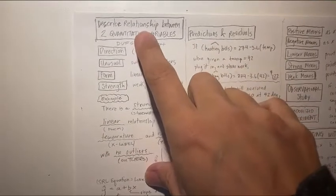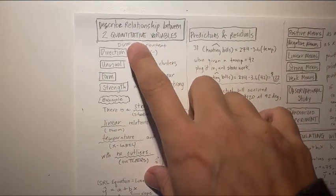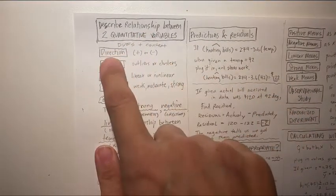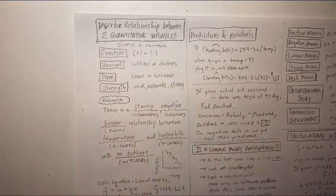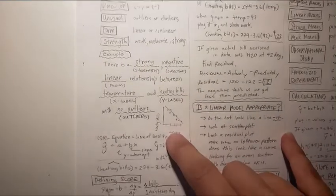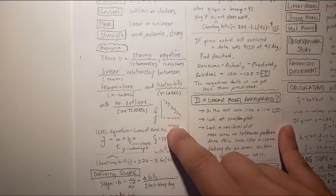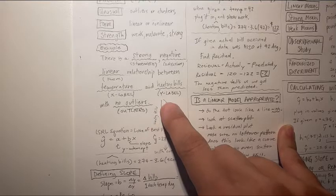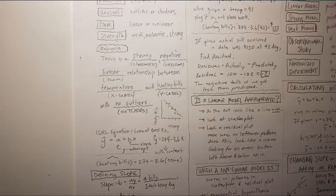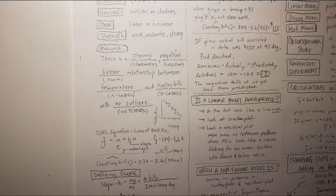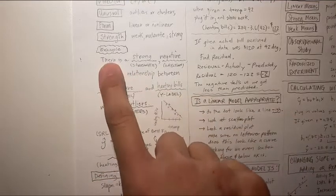If you're asked to describe this relationship between those two variables, then you're going to want to make sure you list each of these items that spell the word DUFFS and not forgetting context. So if I look here at just this little quick sketch of the temperature and the heating bills and some dots that go around it, I'm going to describe what I see there in one sentence.